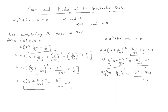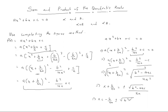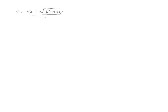Taking the square root of both sides, x plus b over 2a equals plus or minus the square root of b squared minus 4ac over 2a, since the square root of 4a squared is 2a. Therefore x equals negative b over 2a plus or minus the square root of b squared minus 4ac over 2a, which can be written as x equals negative b plus or minus the square root of b squared minus 4ac, all over 2a.